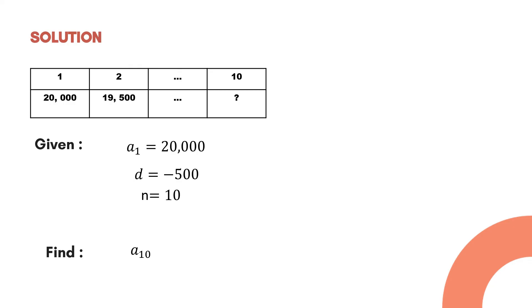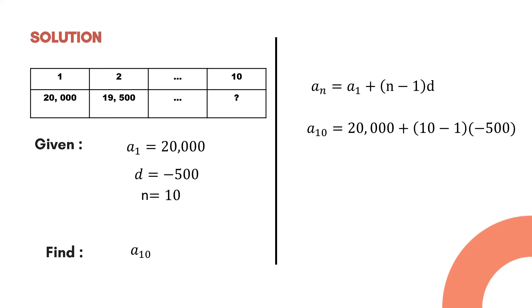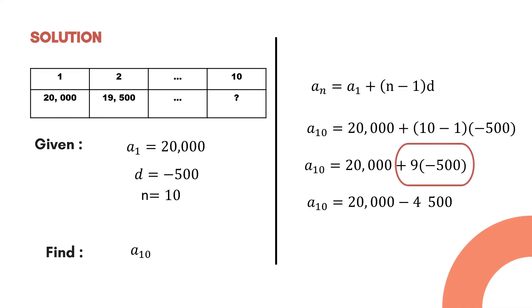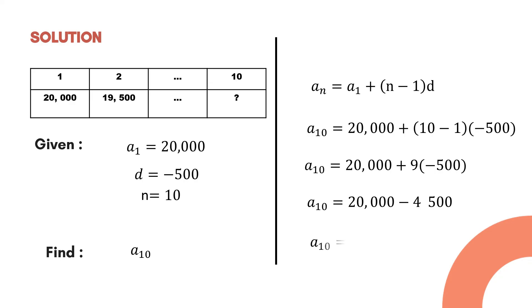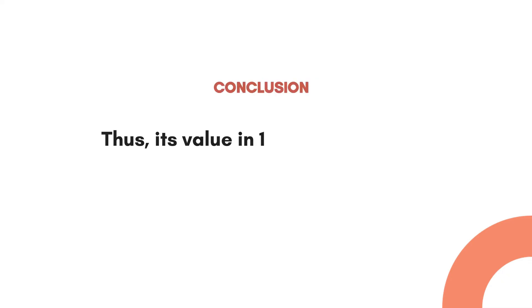Our goal is to find a₁₀. Using the arithmetic sequence formula aₙ = a₁ + (n − 1) × d, we substitute: a₁₀ = 20,000 + (10 − 1) × (−500) = 20,000 + 9 × (−500) = 20,000 + (−4,500). Therefore a₁₀ = 15,500. Thus the value of the phone after 10 years is 15,500 pesos.